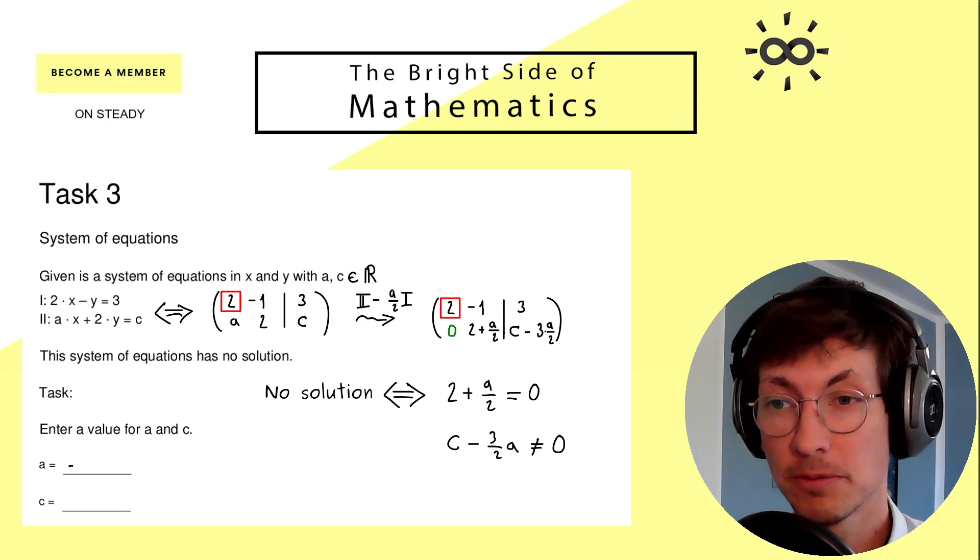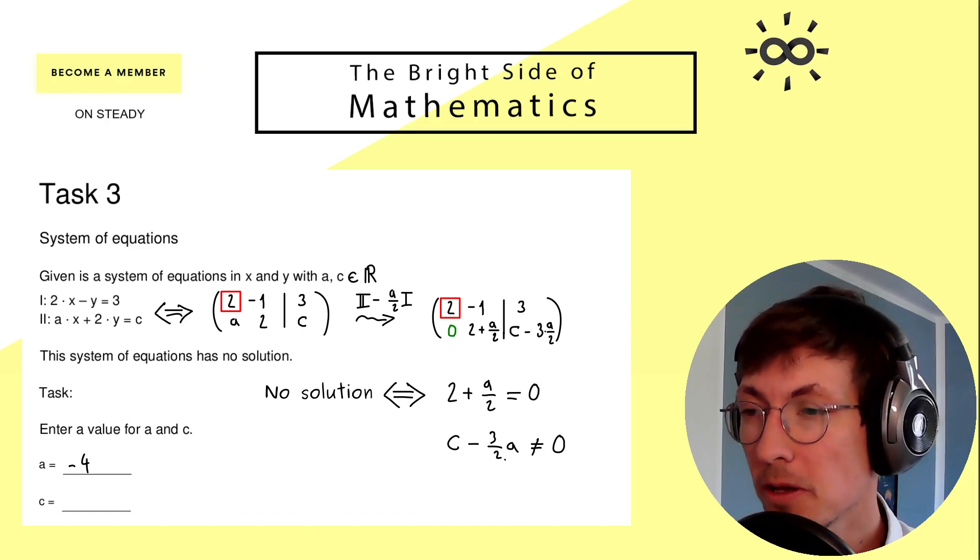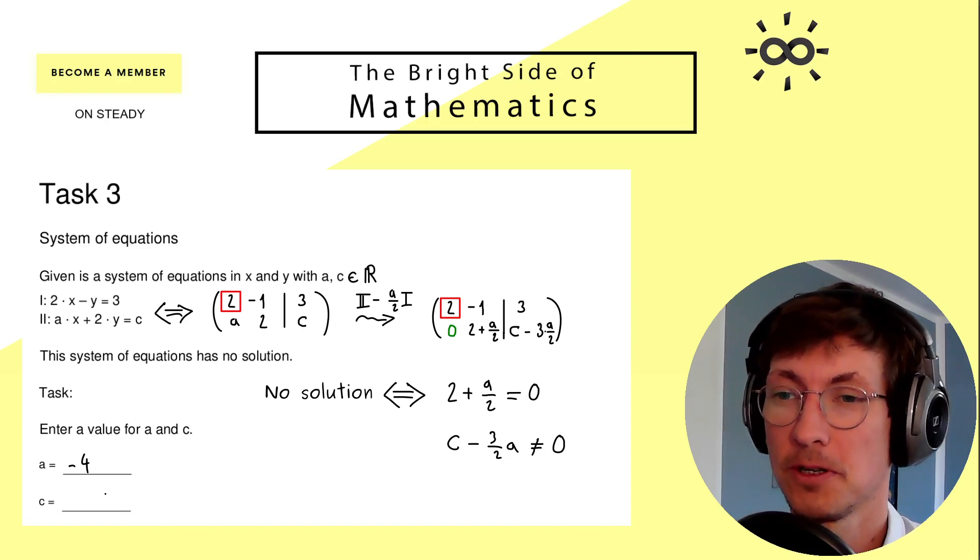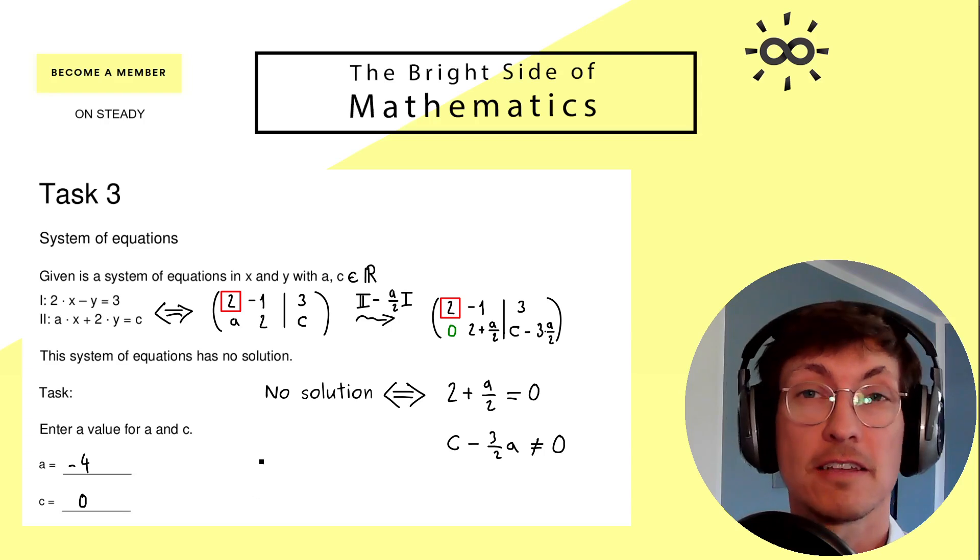Therefore we don't need to do a whole calculation again in generality because we immediately see the solution of the first equation and we just take a suitable c in the second inequality. Hence we get a is equal to -4—there is no choice—but for c we have a lot of possible values; only -6 is not possible. So you could choose zero, for example, and that's it. That's the whole exercise.